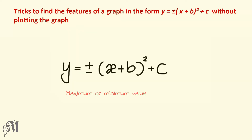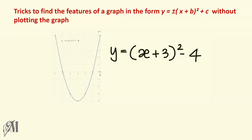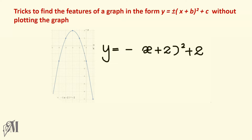The maximum or minimum value of a graph can be found by the value of c in the equation. In this equation, c is minus 4 and that is the minimum value of the graph. And in this equation, c is plus 2 and that is the maximum value of the graph.